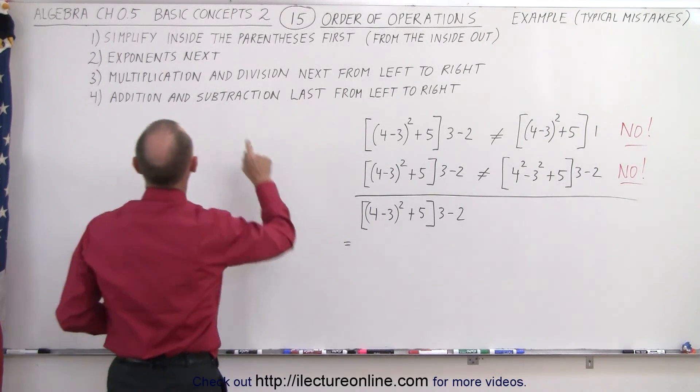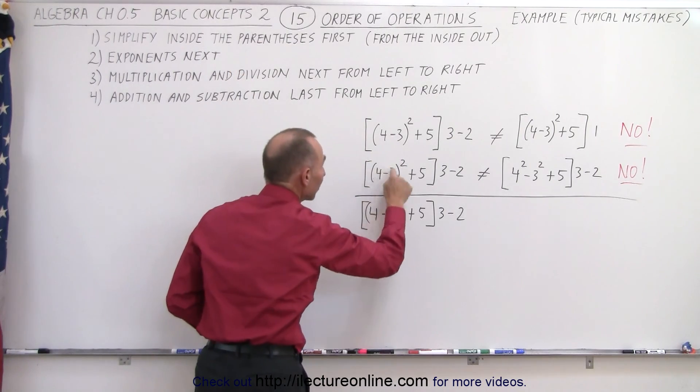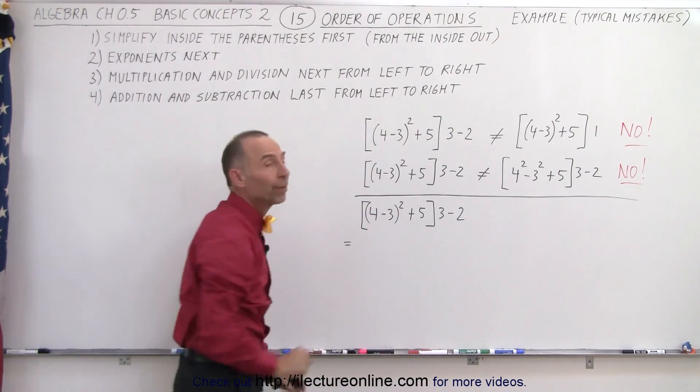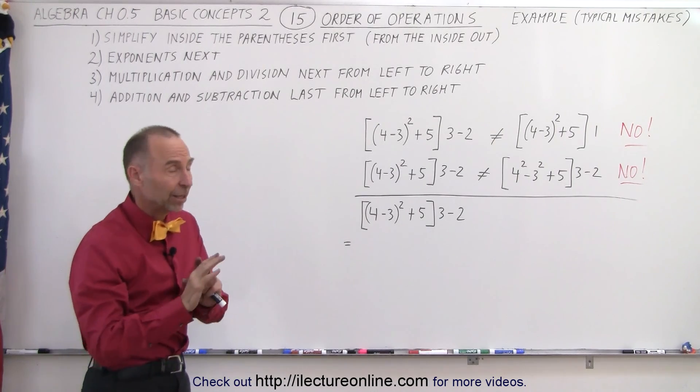Why not? Because we need to follow the order of operations. We need to simplify what's inside the parentheses first before we apply the exponent. So these are two very typical errors you don't want to make.